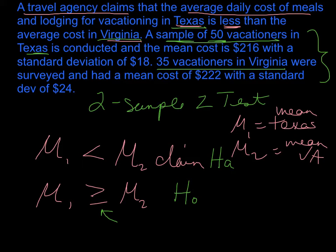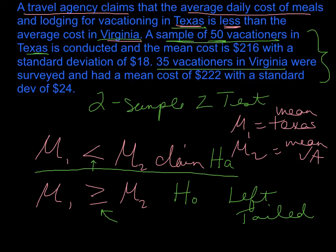I look at my Hₐ, my alternative hypothesis, to tell whether it's left-tailed, right-tailed, or two-tailed. In this case, we have the less than symbol - that little arrow kind of is pointing to the left, so we're conducting a left-tailed test.